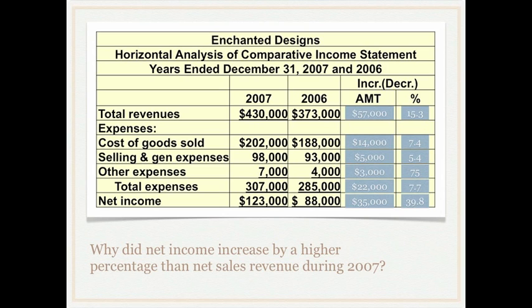There are a couple of things going on here. Other expenses is quite small and increased by 75%, but that wasn't a huge change because the number was small to begin with. This is what a horizontal analysis allows us to do — instead of just looking at numbers, we can look at percentages and tell what total revenues did and what net income did. Net income increased by 39.8%, which is more telling than just looking at the raw numbers.